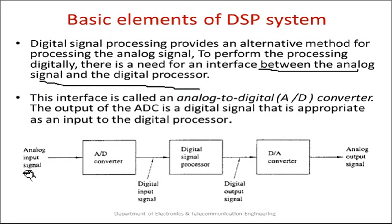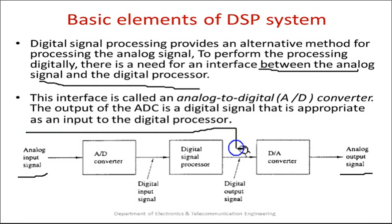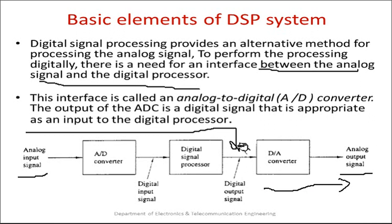As mentioned here, earlier we saw analog input and analog output. Now this interface is introduced in between. So apart from dealing with only digital signal processing, based on need this further part is applied. This interface is called the analog-to-digital converter, or ADC. The output of the ADC is a digital signal that is appropriate as an input to the digital processor — the controller or microprocessor.